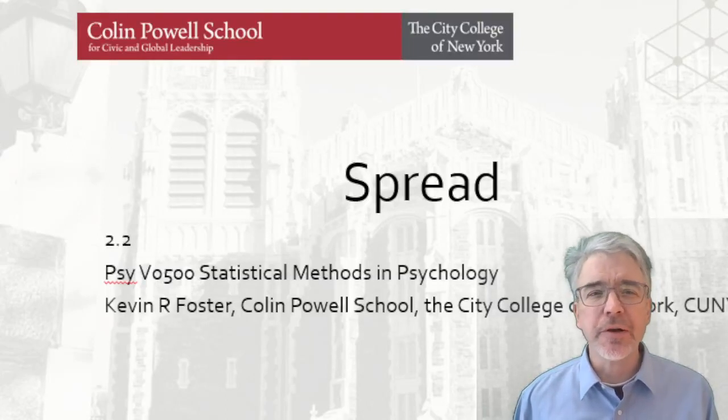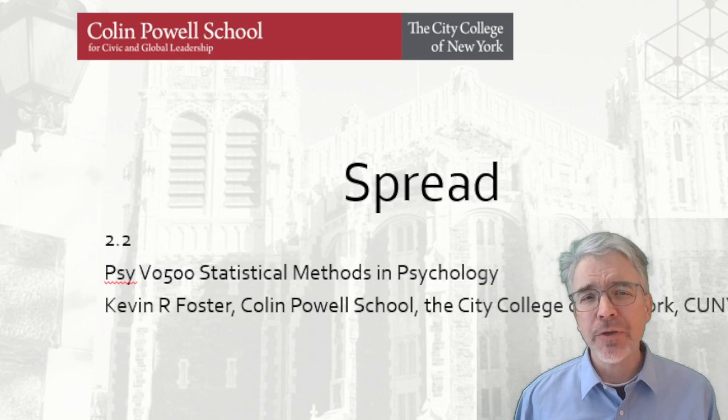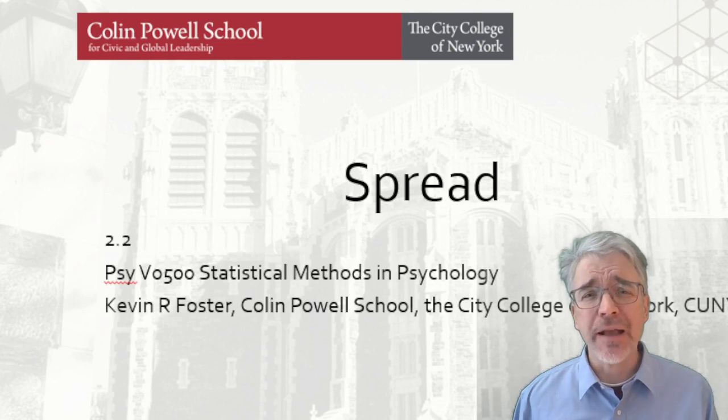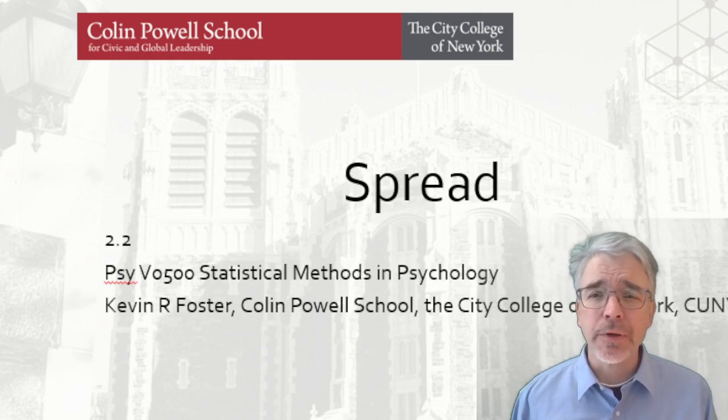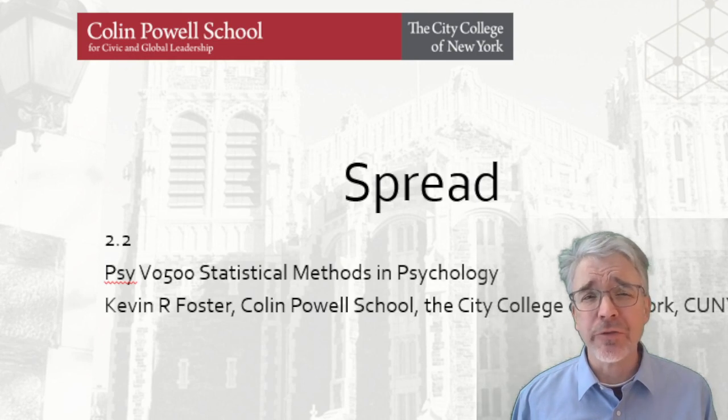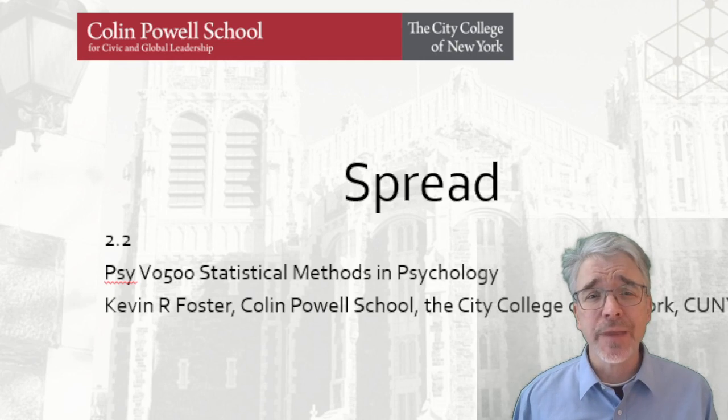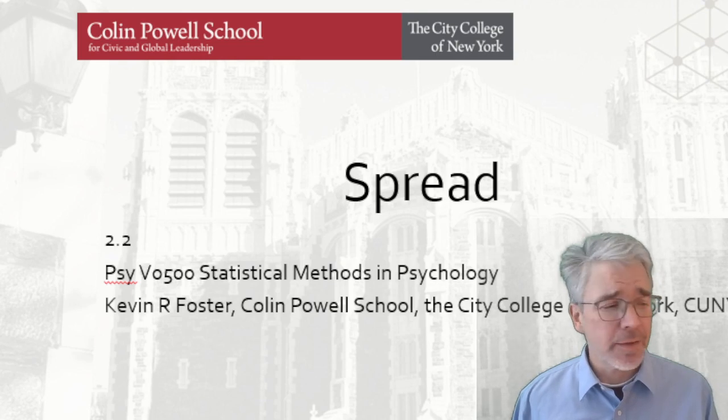Data distributions differ not only in the location of their center but also in how much spread or variation there is around that center point. For example, a new drug might promise an average of 25% better results than its competition, but does that mean 25% of patients improved 100%, or does everybody get 25% better? It's not clear from that central tendency, but if you're the one who's sick, you want to know. Sometimes called a trade-off between risk and return.